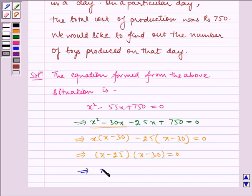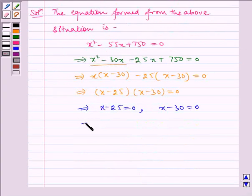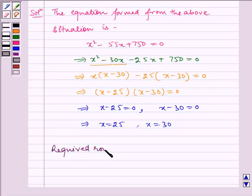Which implies x minus 25 is equal to 0 and x minus 30 is equal to 0. Hence, required roots are 25 and 30.